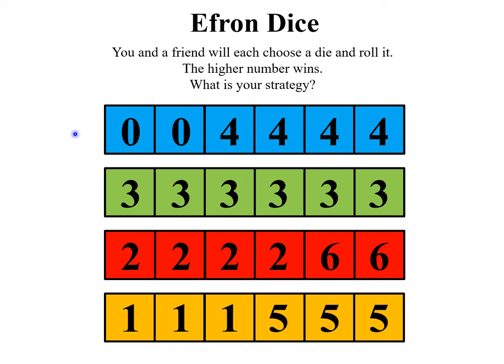The green die is all threes - that's kind of a dumb die because you know before you roll it what it's going to land on. You have the red die and the orange die.